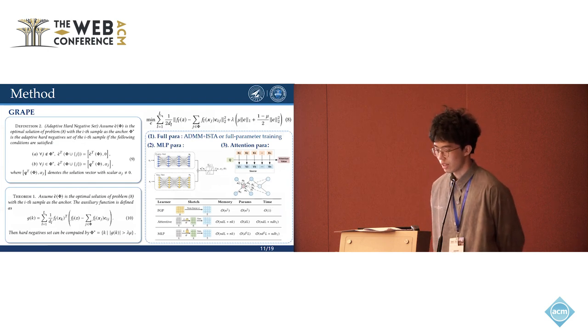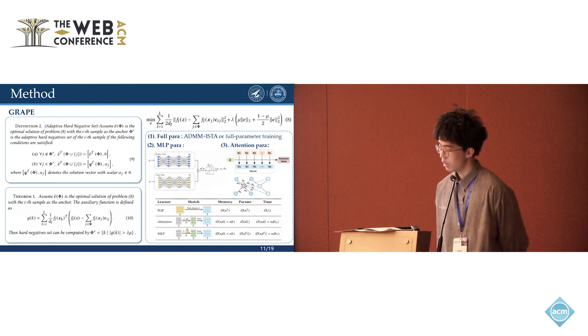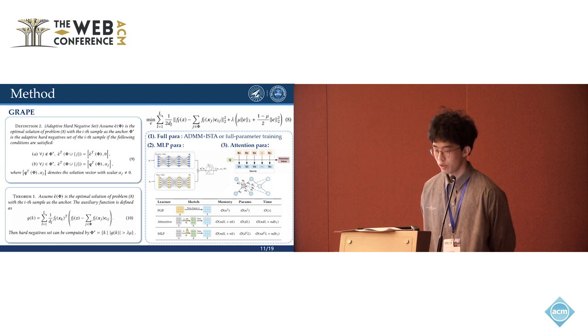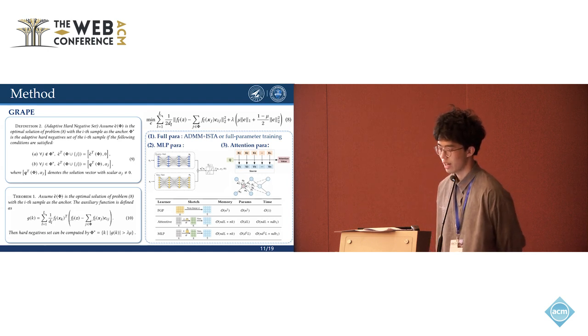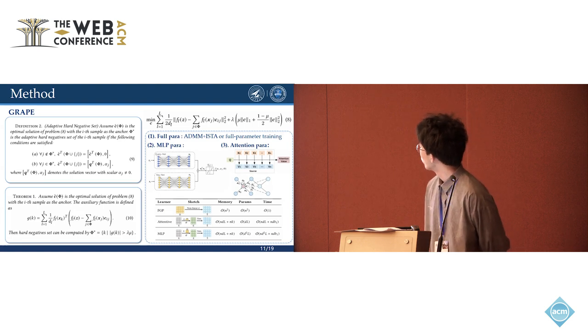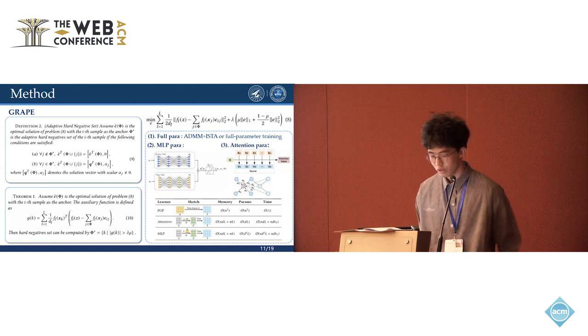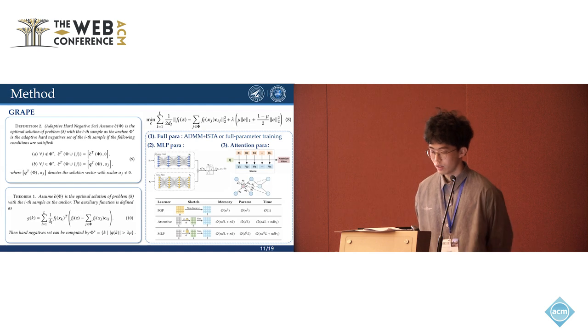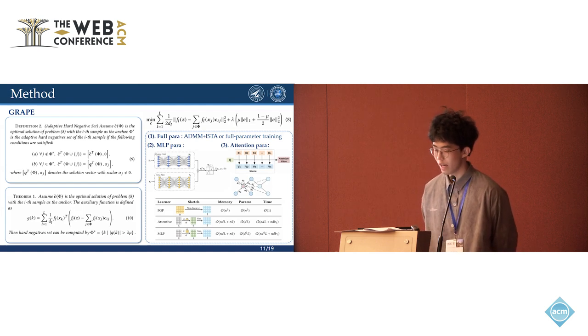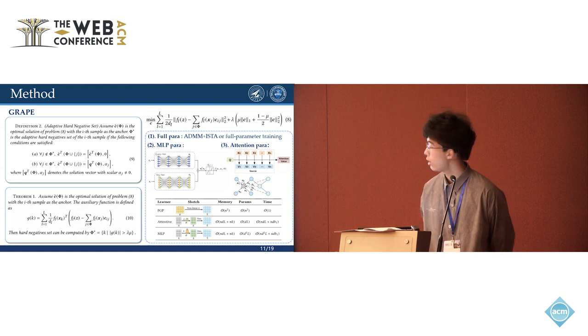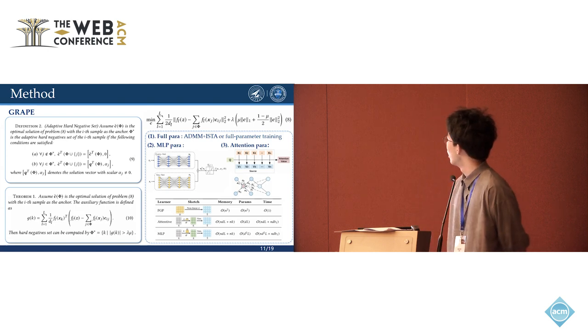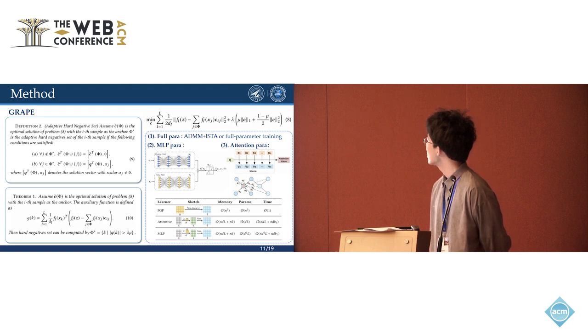Then we can define self-representation-based hard-negative sets. This is definition two. After that, we can compute self-representation-based hard-negative sets according to its definition, which is zero in one, and it's intuitive. In other words, nodes with high similarity to the anchor ratio vectors are selected as hard-negatives, which is the terms inside.